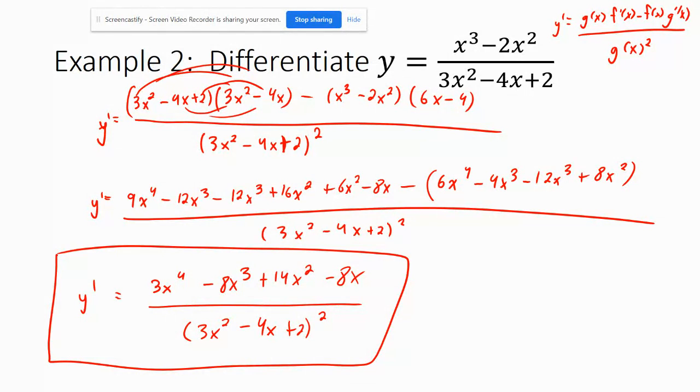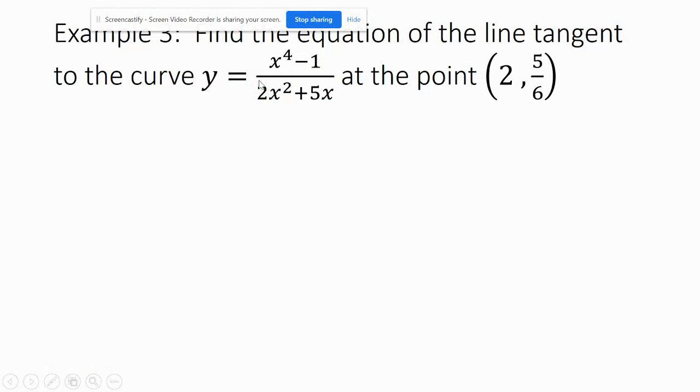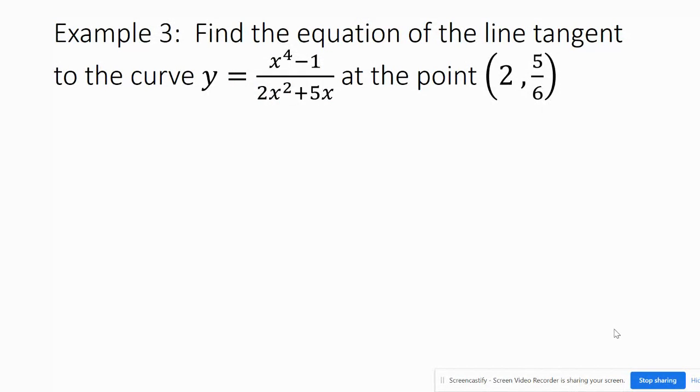Example three, find the equation of the line tangent to the curve at a certain point. So strategy we need to figure out the slope passing through this point over here and we're going to do that by taking the derivative of this function, plugging in x equals 2, getting the derivative, getting the slope, and then using that with this point.